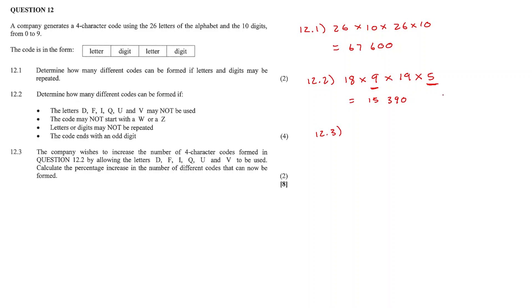Question 12.3: The company wishes to increase the number of four character codes formed in question 12.2 by allowing the letters D, F, I, Q, U, and V to be used. Calculate the percentage increase in the number of different codes that can now be formed. So now we know that these letters can be used. However, all the other three conditions remain the same.